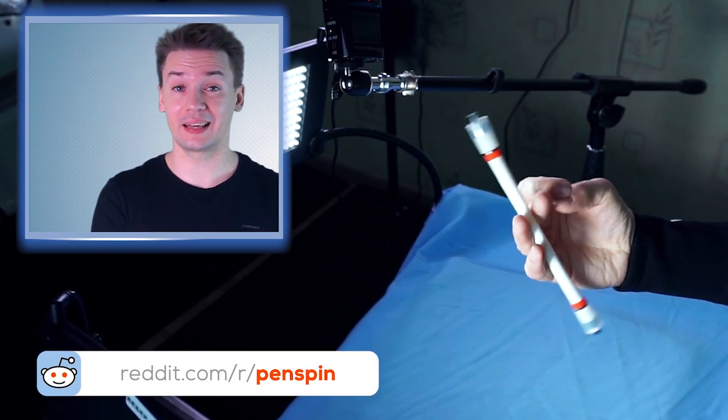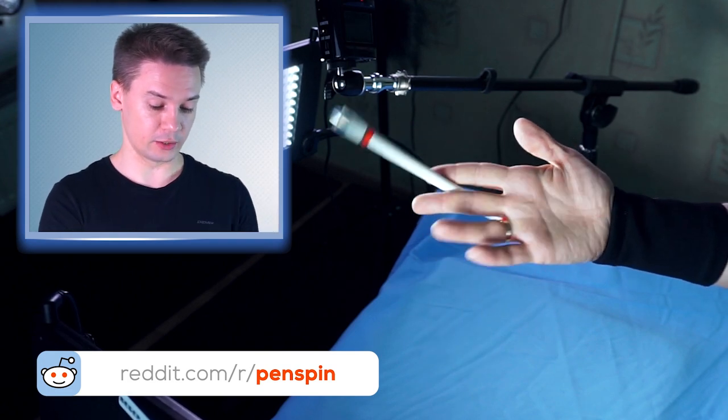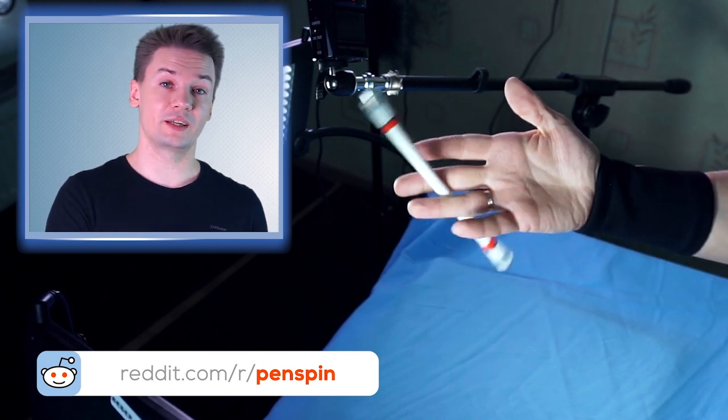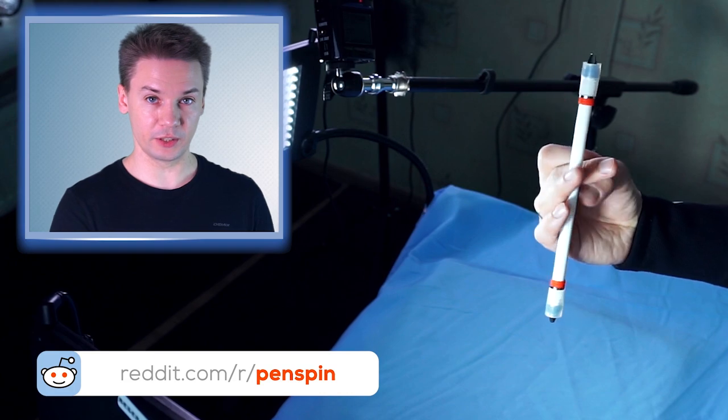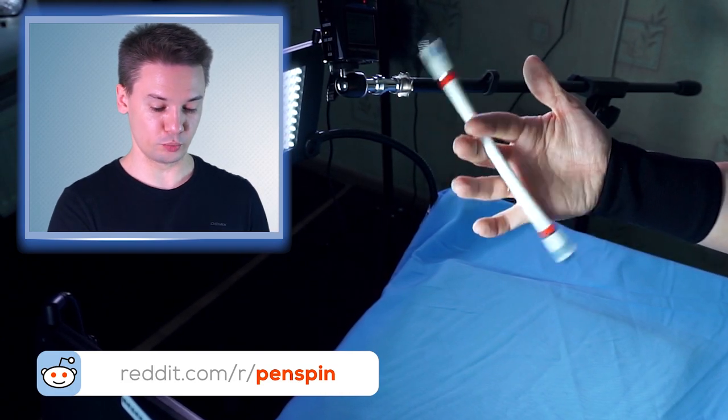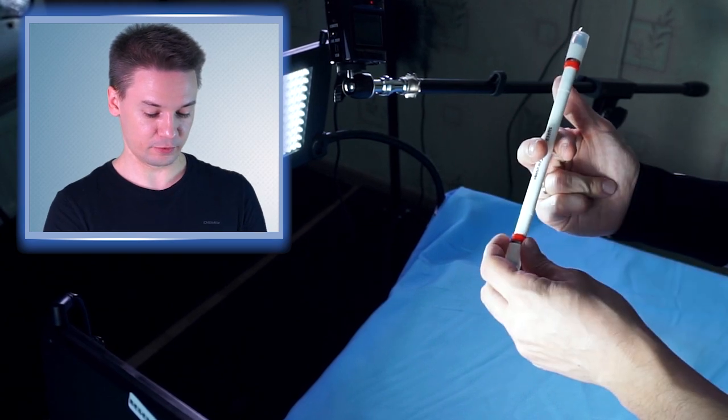Keep the fingers relaxed, don't tense them, so pen could freely rotate between them in slot. At first, divide these two motions, making a little pause between them, keep an eye on ring finger, so it wouldn't interfere pen's movement, so it would pass it freely.